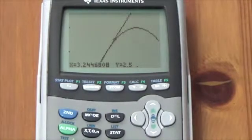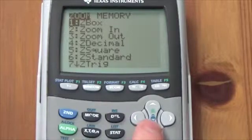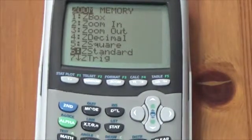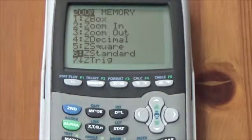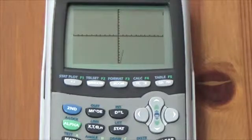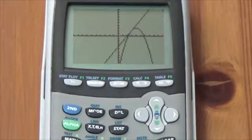So that's zoom in, zoom out, and zoom box. The final one, which you should all be familiar with, is zoom standard. If you ever start graphing something and the window settings look absolutely bizarre, it always helps to press zoom standard. Number six takes you right back to the factory default settings: negative 10, 10, 1, negative 10, 10, 1.